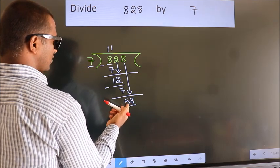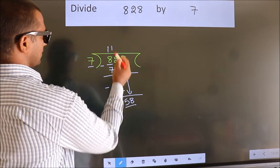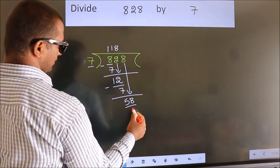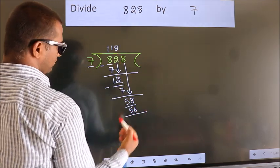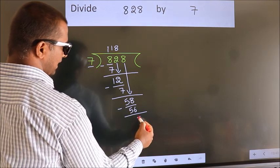A number close to 58 in 7 table is 7, 8, 56. Now we subtract. We get 2.